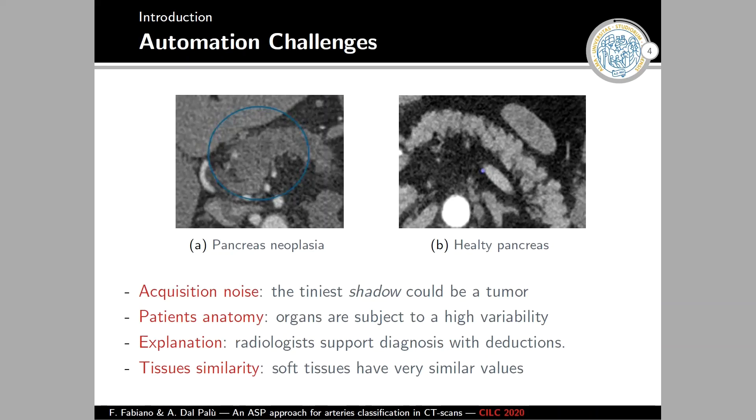But identifying tumors through CT scans is not that easy because, as you can see here in the left side image, you have a scan where a tumor is present. And that tumor is a slight shadow inside the blue circle that is almost imperceptible. That is why we want to provide tools that help radiologists identify the tumor. But this automation has some challenges. The first one is the acquisition noise. Because all the images acquired through CT scans present a lot of noise that can be confused with a tumor. Another problem is the high variability in the patient's anatomy and the need for an explanation. Because we are dealing with radiologists that are experts in their field and want to know why the tumor has been identified in that area. And last but not least is the problem that each tissue is quite similar in this scan. So it's really hard to distinguish them through image recognition and other techniques.